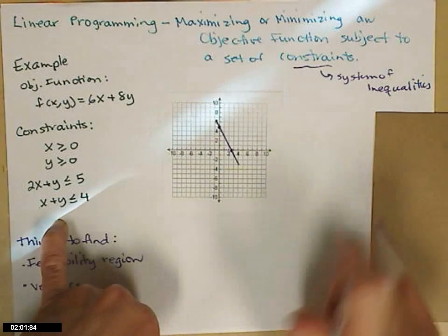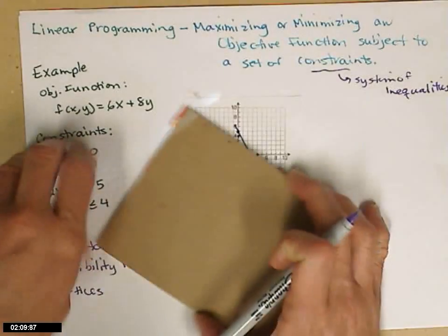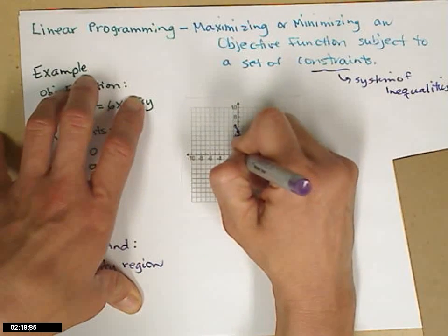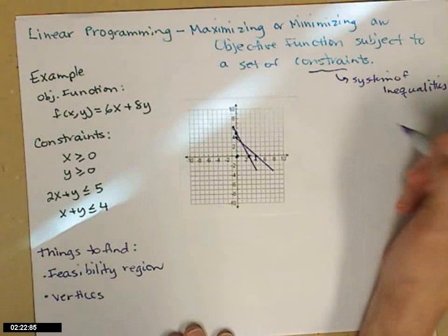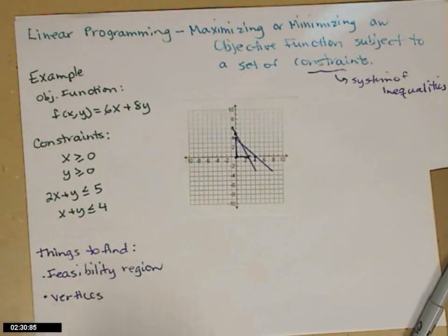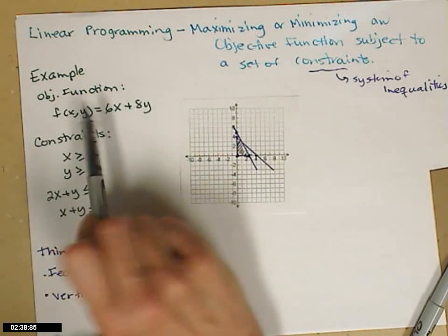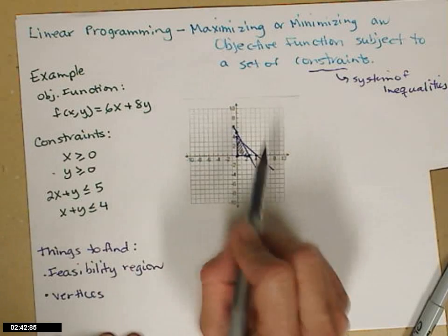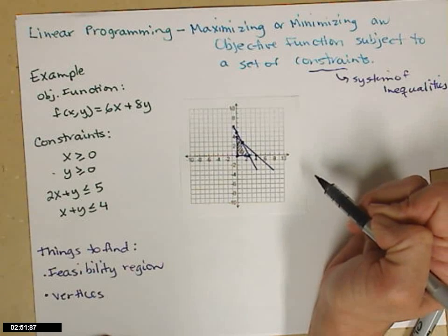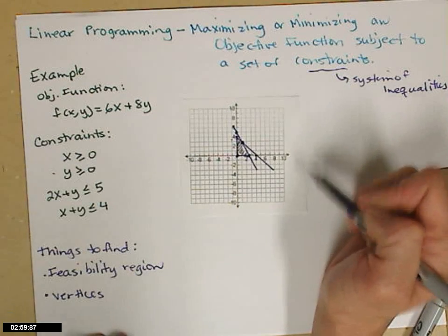Looking at the second line, I have an x-intercept of four and a y-intercept of four. We'll plot those two points and connect them. And then my zeros from the first two constraints, greater than or equal to zero, give me this region here. This shaded section is the feasibility region. If I'm subjected to these constraints, I can only pick points that come in that shaded region. Not only that, it has to be one of the vertices — so I need to find those corners of that four-sided shape.